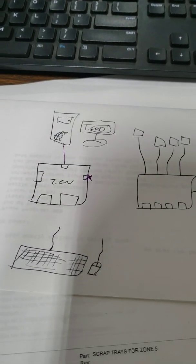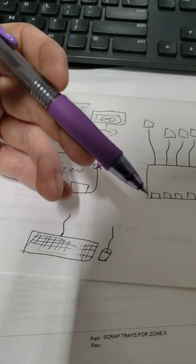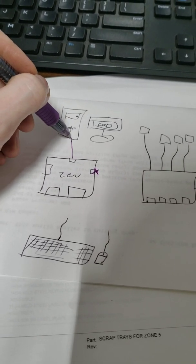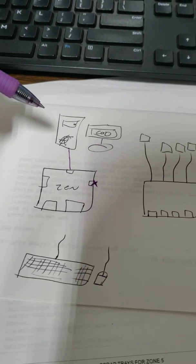So as soon as the Zen powers on, the first thing that it needs to see is either your console or your PC if that's what you're playing on. So connect with the micro USB in the back.